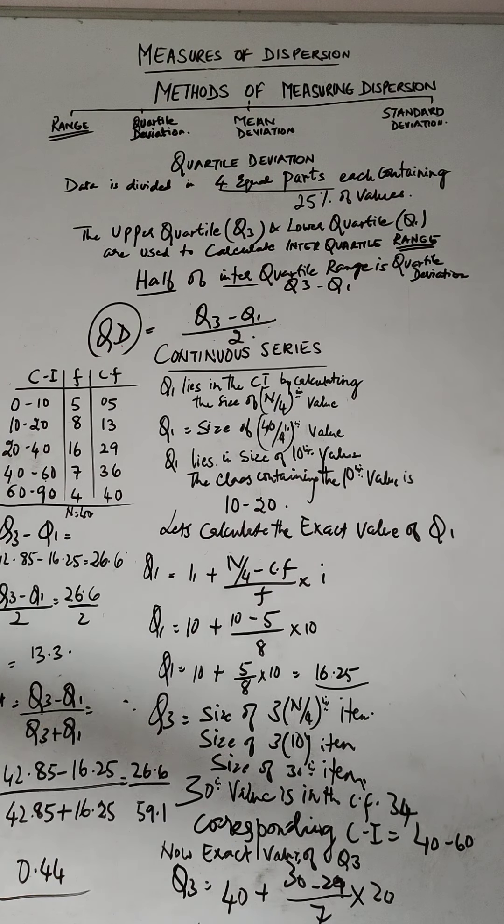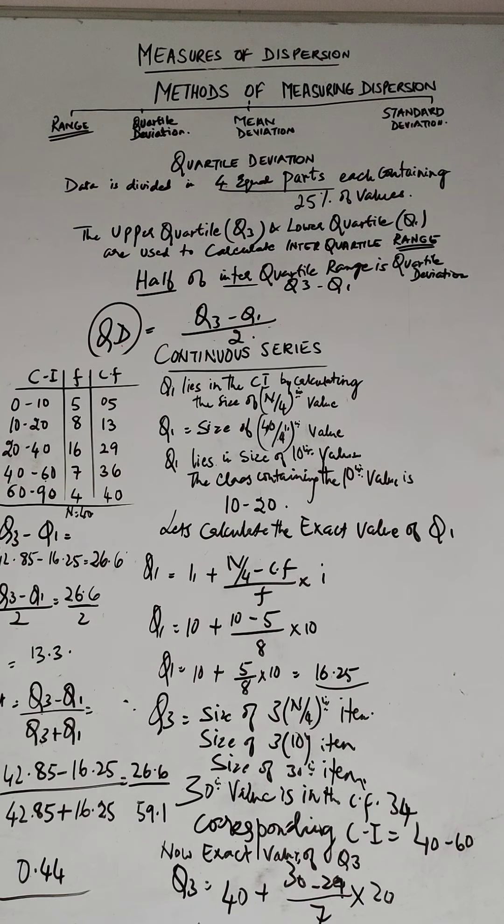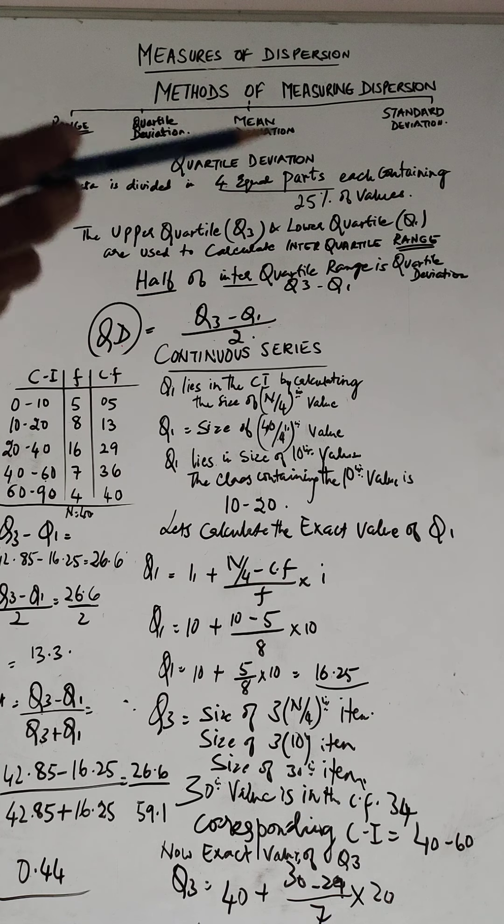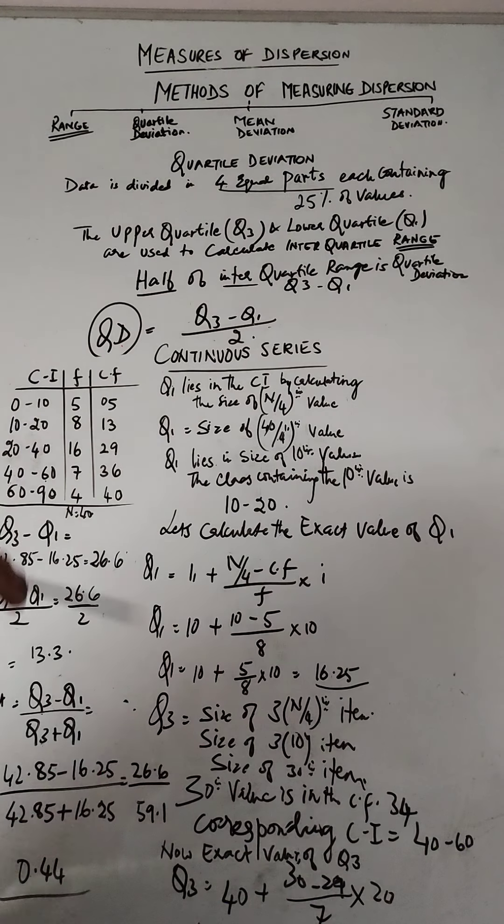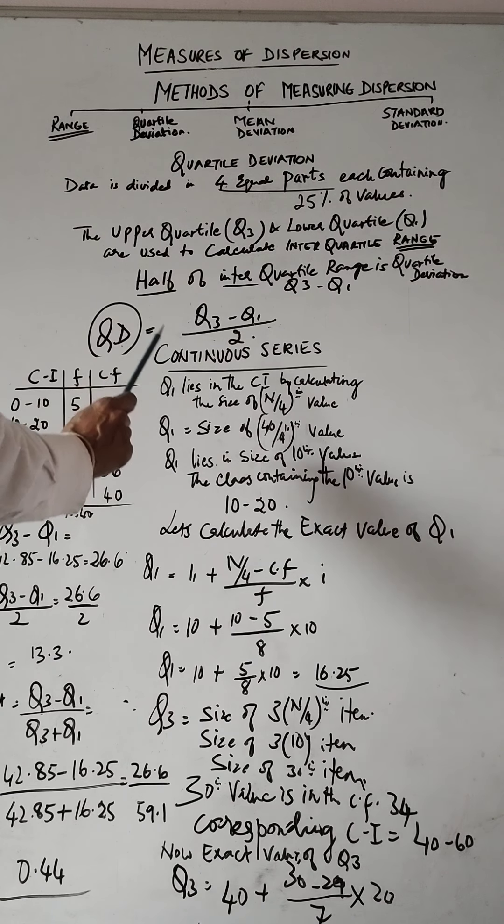I have written the class intervals as 0 to 10, 10 to 20, 20 to 40, 40 to 60, 60 to 90. You must have noticed the class intervals change after this - they are unequal but that doesn't really matter. First we calculate the cumulative frequencies. If there was a range, the smallest value is 0, the highest value is 90, so 90 minus 0 is 90. That would have been the range.